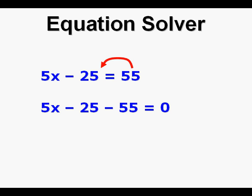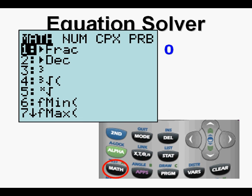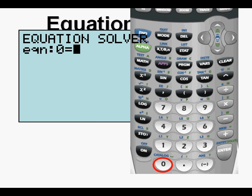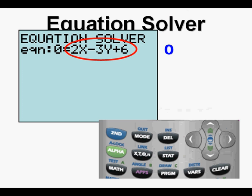We get to equation solver by pressing the Math key on the left of the keypad. Then we can either arrow down to zero and press Enter, or we can just press the zero key.